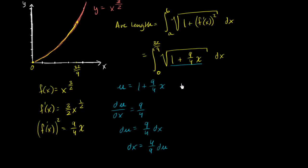When x equals zero, then u is going to be equal to nine fourths times zero is zero. So u is going to be equal to one.